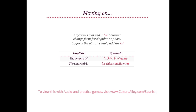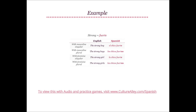Adjectives that end in E don't change form depending on gender, but they do change form for singular or plural. To form the plural, simply add an S. The smart girl translates to la chica inteligente; the smart girls becomes las chicas inteligentes. Strong translates to fuerte: the strong boy is el chico fuerte, the strong boys becomes los chicos fuertes, the strong girl will be la chica fuerte, and the strong girls is las chicas fuertes.